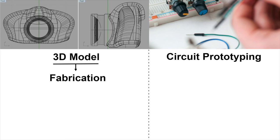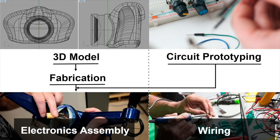Once the 3D models are created, we probably use some fabrication techniques to create the physical objects, like 3D printing. Once the physical object is created, we need to embed the circuits inside the 3D models. This involves two additional processes: electrical component assembly and electrical wiring.